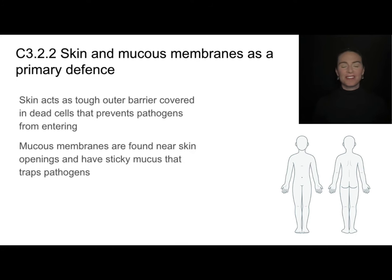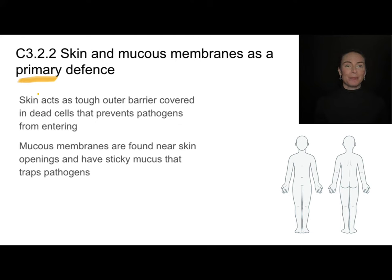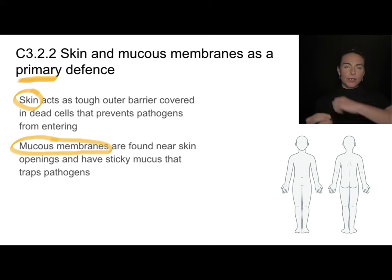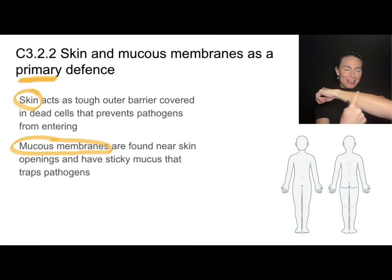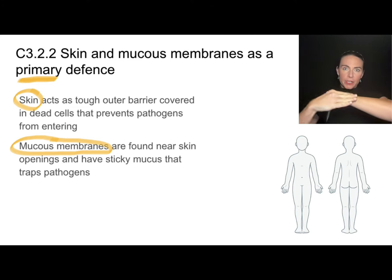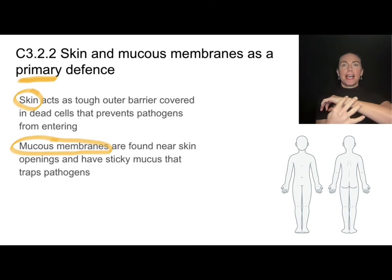We'll be learning about a lot of sophisticated mechanisms for dealing with pathogens. But our body's first line of defense — its primary defense mechanism — involves two things we don't often think about in terms of immunity: our skin and our mucous membranes. Our skin is made out of a very tough barrier, and this outer layer of skin is actually dead. Because those are dead cells, it forms an impenetrable barrier for pathogens trying to make their way into our bloodstream. That's how pathogens become dangerous — skin prevents them from getting in.